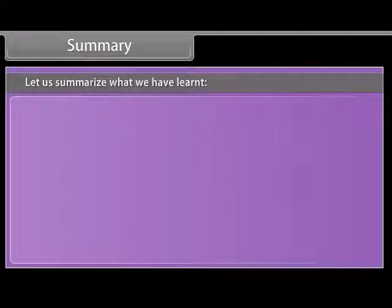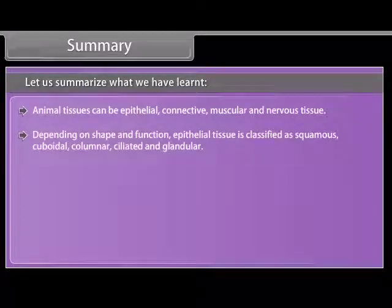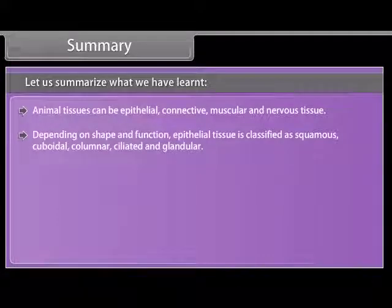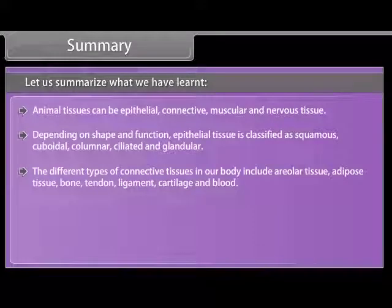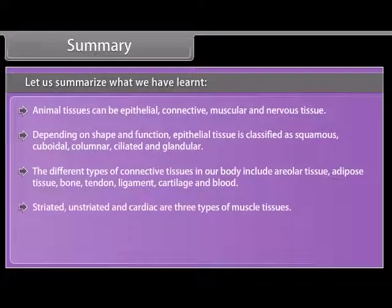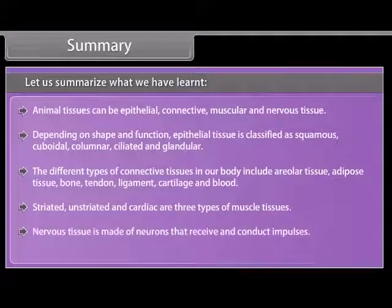Summary: Animal tissues can be epithelial, connective, muscular, and nervous. Depending on shape and function, epithelial tissue is classified as squamous, cuboidal, columnar, ciliated, and glandular. The different types of connective tissues include areolar tissue, adipose tissue, bone, tendon, ligament, cartilage, and blood. Striated, unstriated, and cardiac are the three types of muscle tissues. Nervous tissue is made of neurons that receive and conduct impulses.